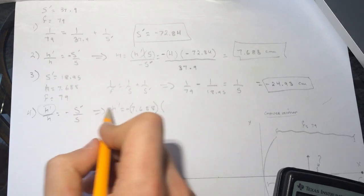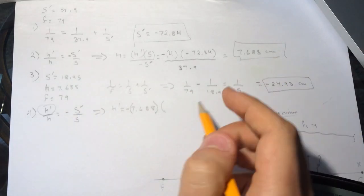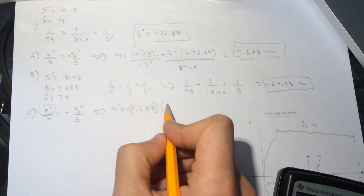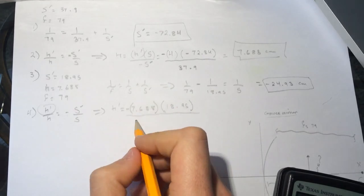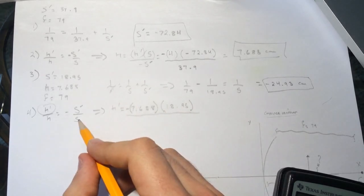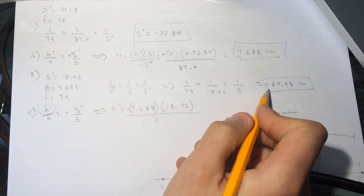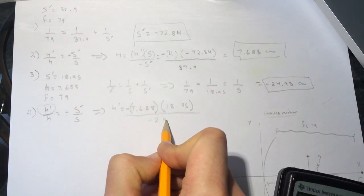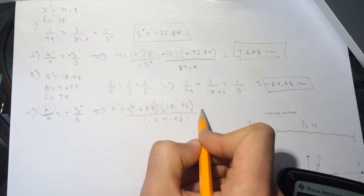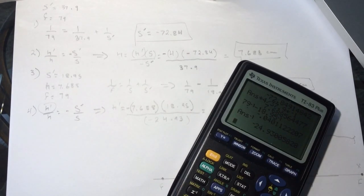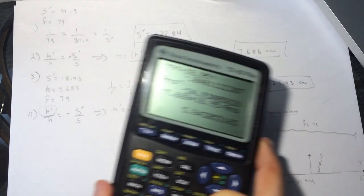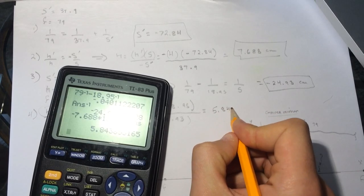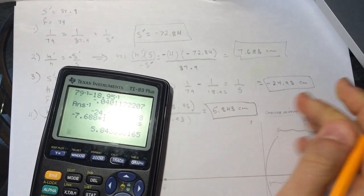Times the S prime and the S prime is 18.95 divided by the S. And the S is the one we got from the one before this question here. So 24.93. So you can see that we'll get the positive value. So minus 7.688 times 18.95 divided by our answer. We'll get 5.843 centimeters.